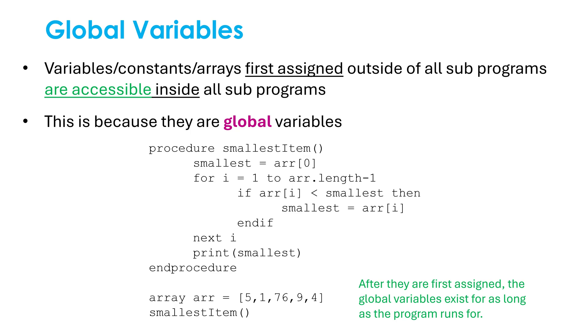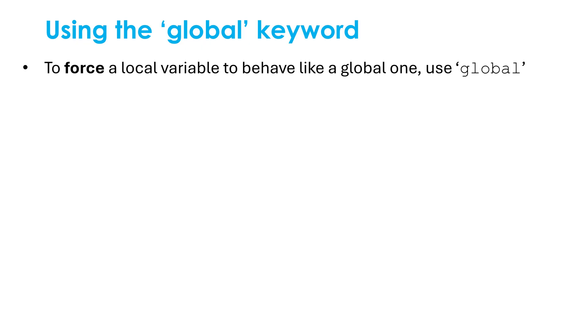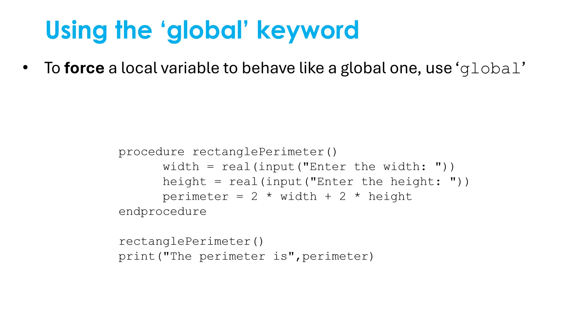Now I'm saying all this like global is good and local is bad, but really it's the opposite — we do generally want to avoid using global variables. If you wanted to use more global variables than you should, there is a keyword you can put into either Python code or pseudocode to force a local variable to behave like a global one. This is just the word 'global' that you stick before the identifier. Here is some code which doesn't use the global keyword just yet — a procedure to calculate the perimeter of a rectangle.